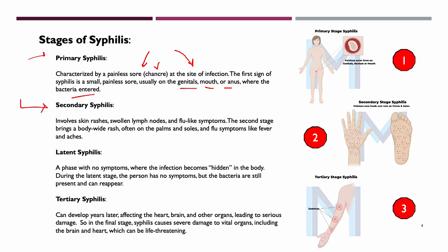We then have secondary syphilis, which involves skin rashes, swollen lymph nodes, and flu-like symptoms. The second stage brings a body-wide rash, often found on the palms and soles of the feet, and flu-like symptoms like fever and aches. You can see that illustrated right here. If left untreated, syphilis will go into latent syphilis — a stage with no symptoms, where the infection becomes hidden in the body.